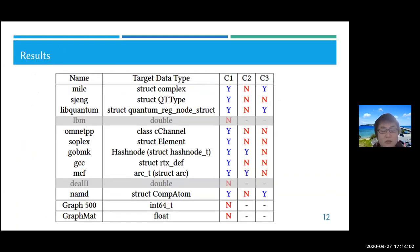This is the result. As you can see, for the SPEC part, many of them have the target data type as structures. Actually five of them have either C2 or C3 as yes, implying that this data partitioning problem is a real concern for these applications. I'll explain the observations in the next slide.